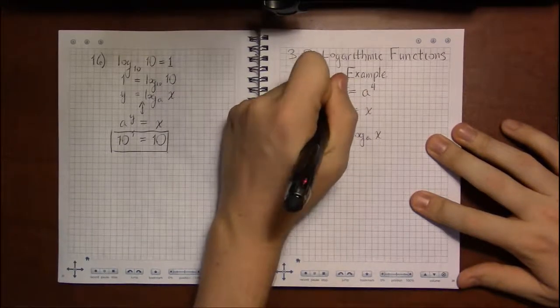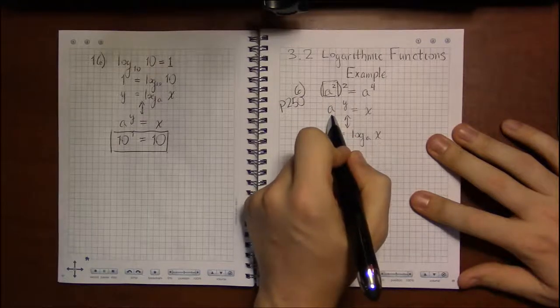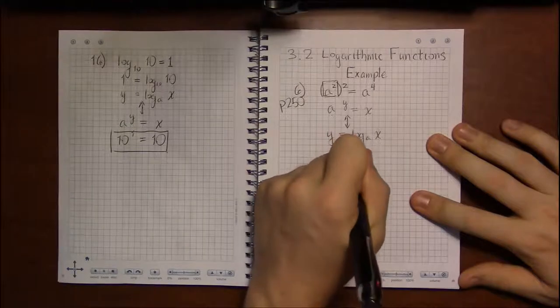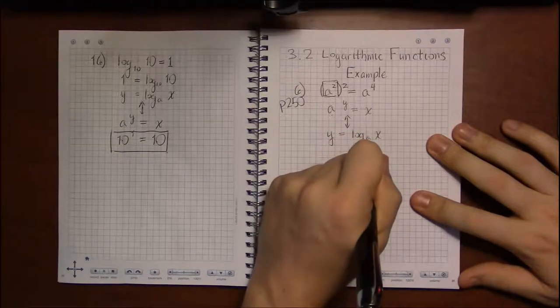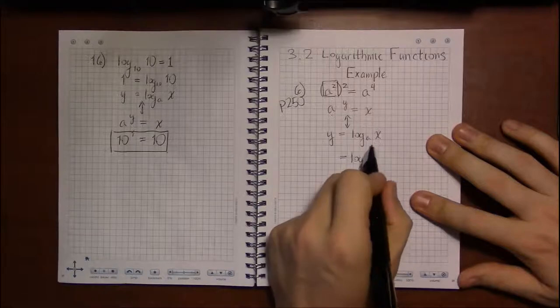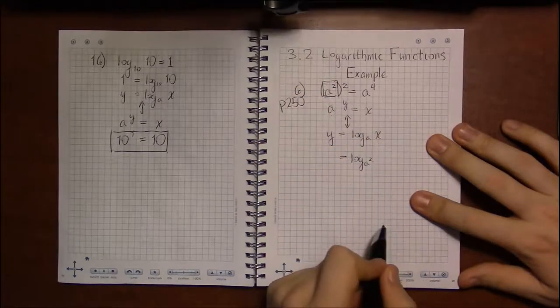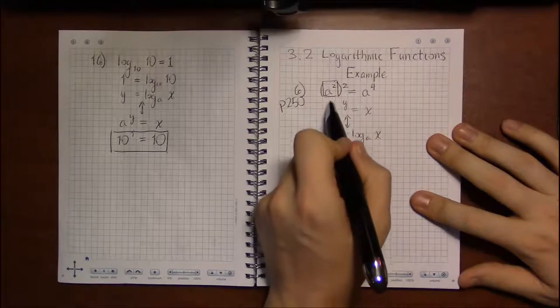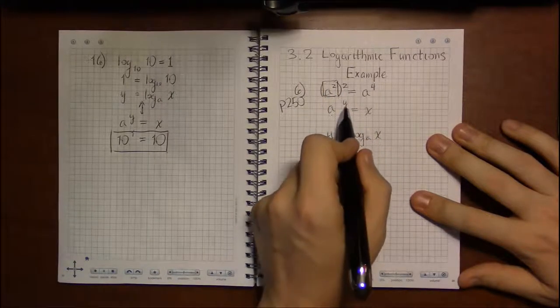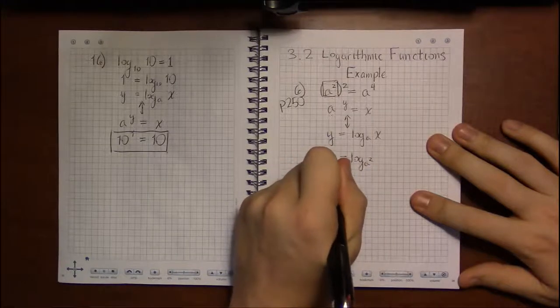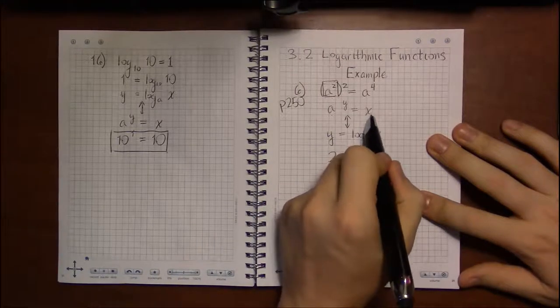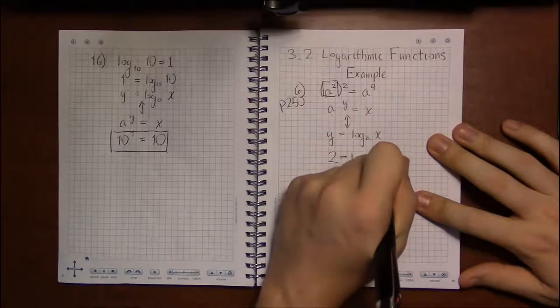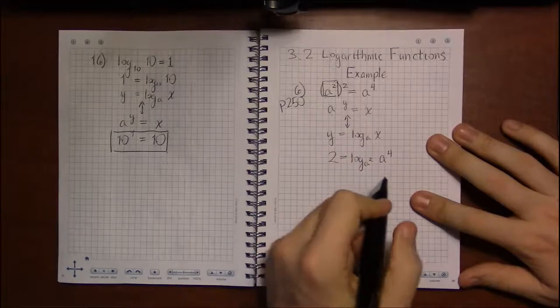What I've got boxed up here is what's acting as our a in this instance. In this case, the subscript on the log, the a, is going to be a squared. The exponent for a squared is 2, so that's acting as our y. And x is the rightmost entity, a to the fourth.